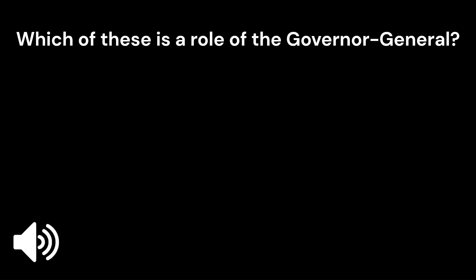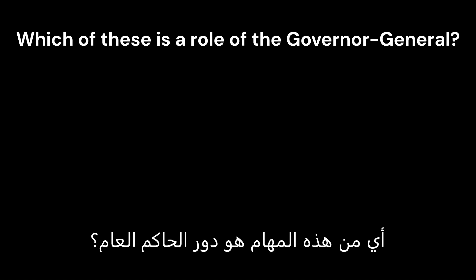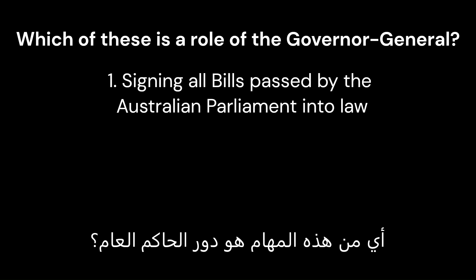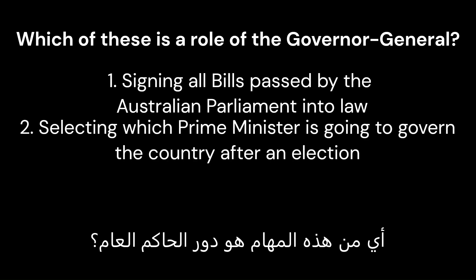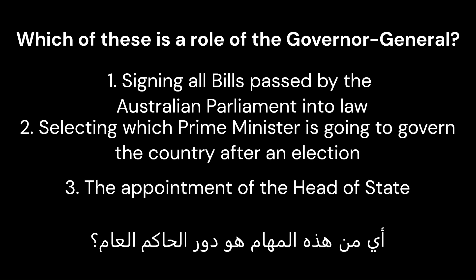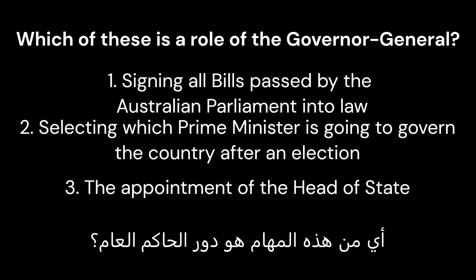Which of these is a role of the Governor-General? 1. Signing all bills passed by the Australian Parliament into law. 2. Selecting which Prime Minister is going to govern the country after an election. 3. The appointment of the Head of State. The correct answer is 1. Signing all bills passed by the Australian Parliament into law.